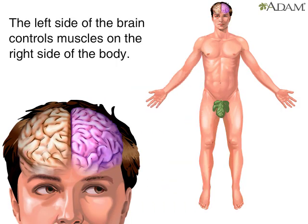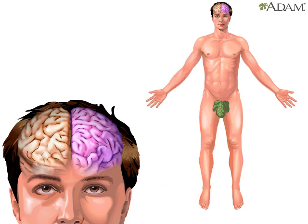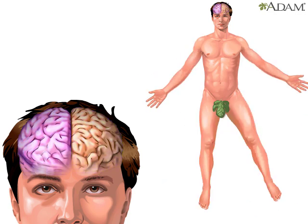Here, the left side of the brain is highlighted to show the control over right arm and leg movement, and the right side of the brain is highlighted to show the control over left arm and leg movement. The left side of the brain controls the muscles on the right side of the body, and vice versa.